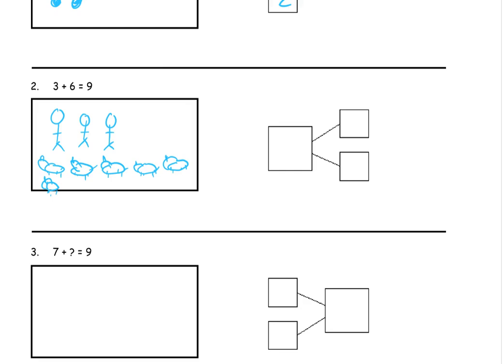Alright, so there's one, two, three, four, five, six. There's six. So there's three plus six. And it equals nine. So we have addends of three and six. And a total of nine.